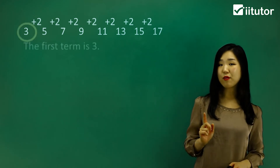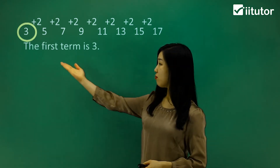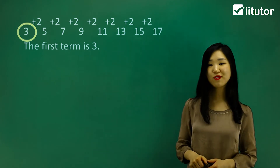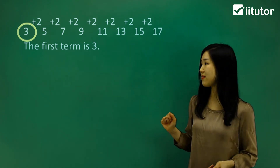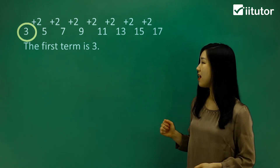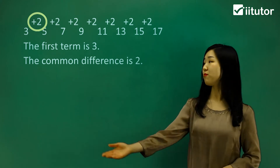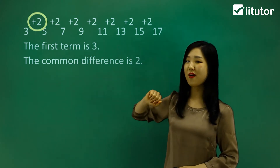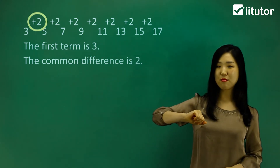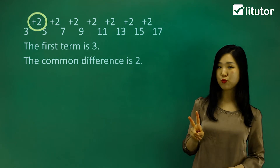Now, if I want to know what the first term is — just the first term in the sequence — which is just 3. That's all you have to say. So that's the first term: 3. And then what's the common difference? It's the difference that occurs to get the next number. So that's the common difference: 2.